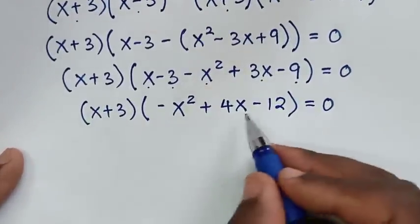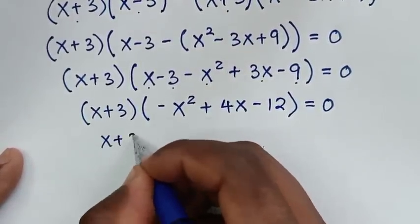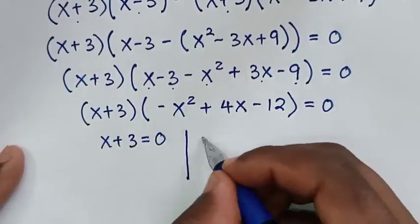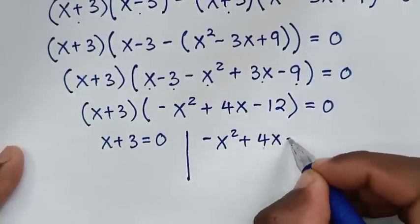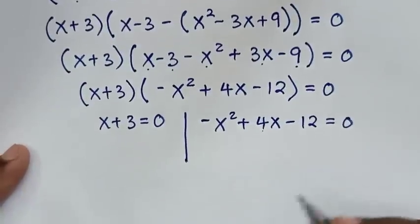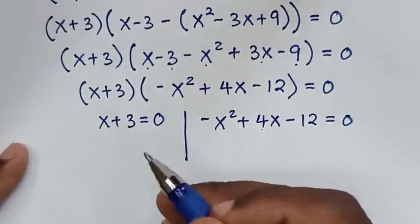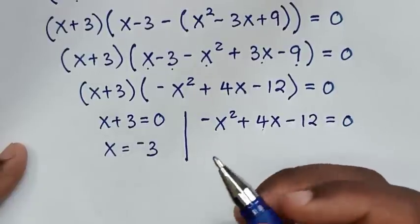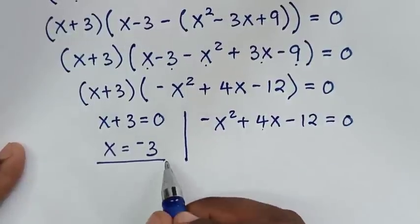From here we have two solutions. The first solution is x plus 3 equals 0, and the second solution is negative x squared plus 4x minus 12 equals 0. From the first solution, taking 3 to the right side gives x equals negative 3. This is the first value of x, which is the real solution.